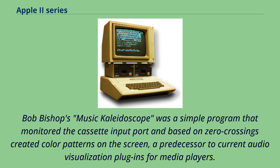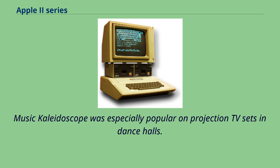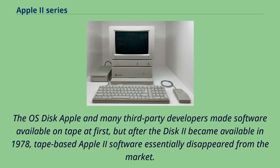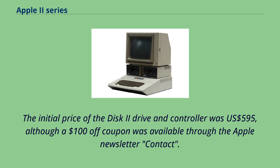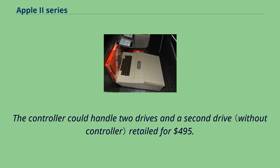Apple and many third-party developers made software available on tape at first, but after the Disk II became available in 1978, tape-based Apple II software essentially disappeared from the market. The initial price of the Disk II drive and controller was $595 US dollars, though a $100 off coupon was available through the Apple newsletter. The controller could handle two drives and a second drive retailed for $495. The Disk II single-sided floppy drive used 5.25-inch floppy disks.